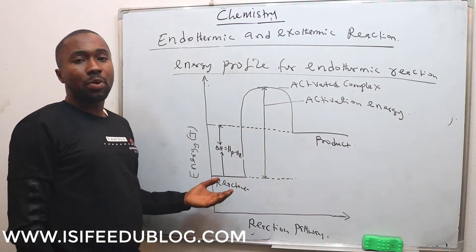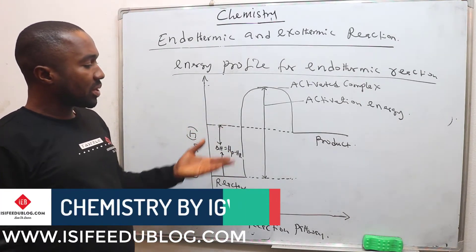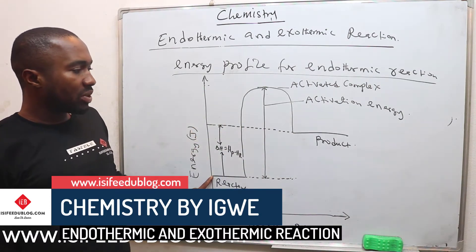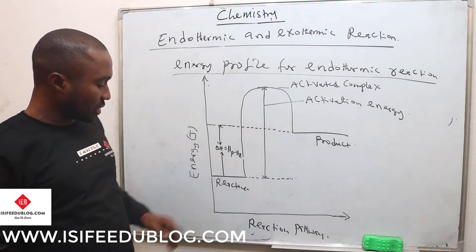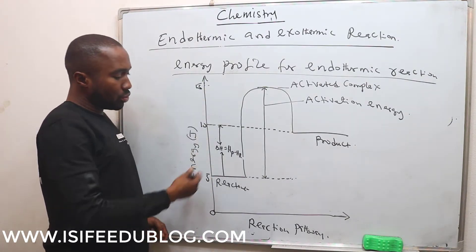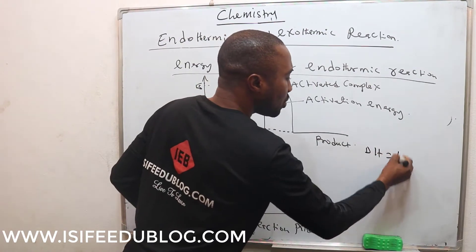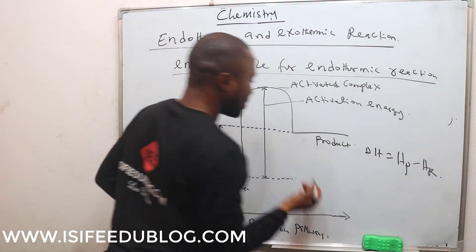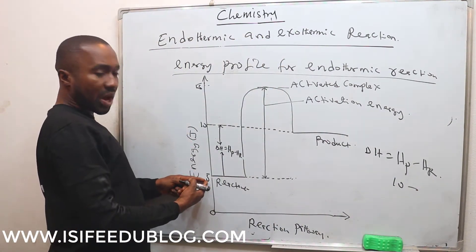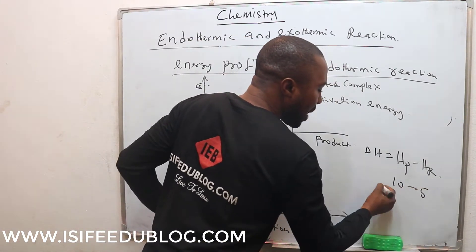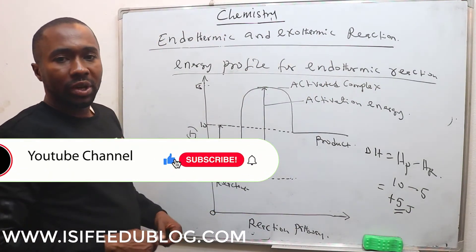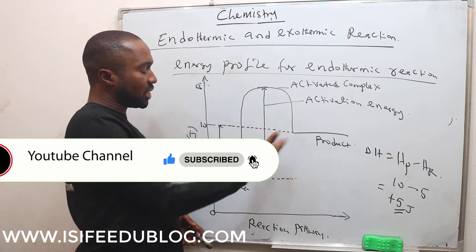This is the energy profile for the endothermic reaction. In an endothermic reaction, the heat of the product is greater than the heat of the reactant, which is why the enthalpy change is positive. For instance, if we label the y-axis as 0, 5, 10, and 15, the enthalpy change — heat of product minus heat of reactant — gives us 10 minus 5, which equals plus 5. Because it is positive, the reaction is endothermic.